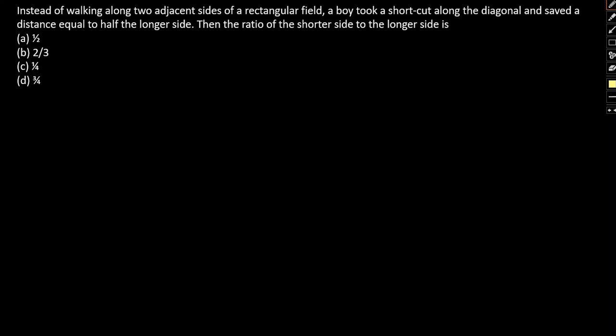Instead of walking along the two adjacent sides of a rectangular field, the boy took a shortcut along the diagonal and saved the distance equal to half the longer side. Then the ratio of the shorter side to longer side is.